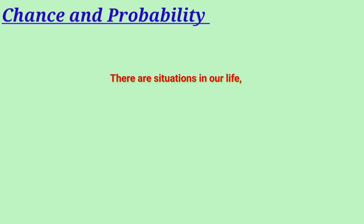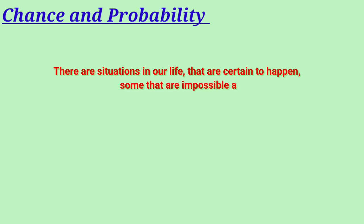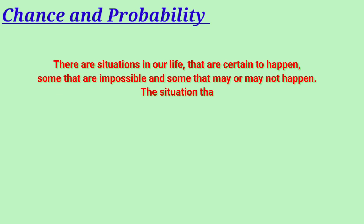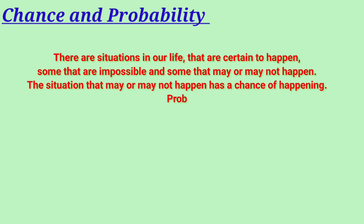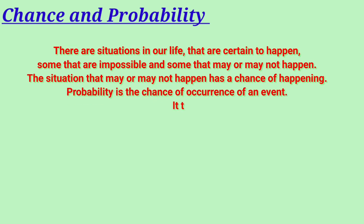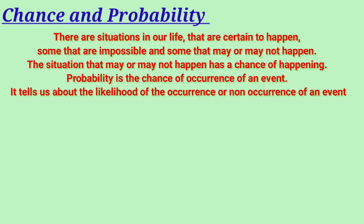There are situations in our life that are certain to happen, some which are impossible, and some that may or may not happen. The situation that may or may not happen has a chance of happening. Probability is the chance of occurrence of an event. It tells us about the likelihood of the occurrence or non-occurrence of an event.